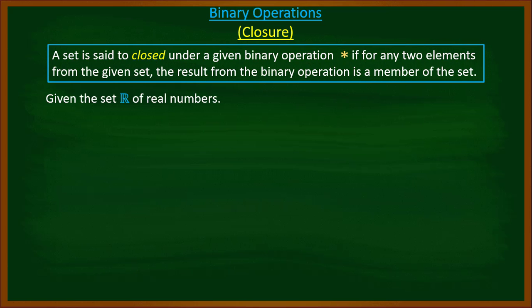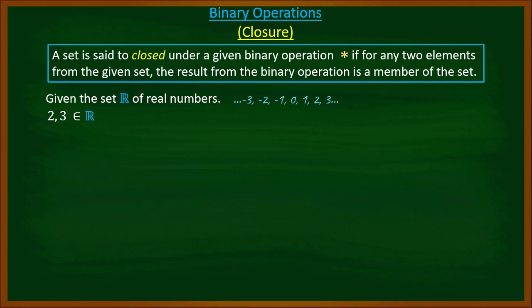Assuming we are given the set of real numbers, which spans from negative infinity to positive infinity. If we pick two numbers from the set — say two and three — and perform the operation addition, we get five, which is also a real number.